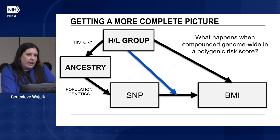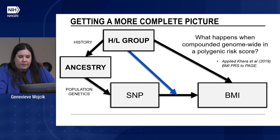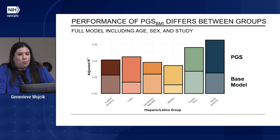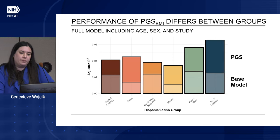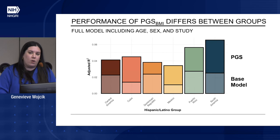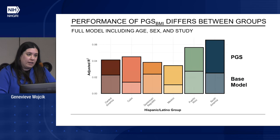What happens when this is compounded genome-wide in a polygenic score? We applied an older BMI PRS to PAGE — the 2019 Kara et al. paper — where the PRS is trained on all European ancestry participants. We applied it to all of PAGE and compared it to their actual phenotypes. On the y-axis I'm showing adjusted R-squared — what proportion of variation of the trait we're explaining. The full model adjusts for age, sex, and study. You can see the score performs differently between groups — the same risk score applied to all different groups, with the same platform and same weights, explains different distributions of the outcome. We know polygenic scores perform differently across broad ancestral groups — but what I'm showing you here is that it also performs differently within what we typically think of as a homogeneous group, in these more granular groupings.